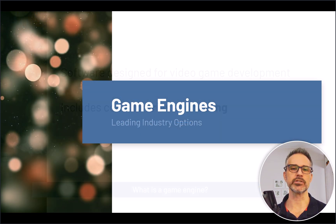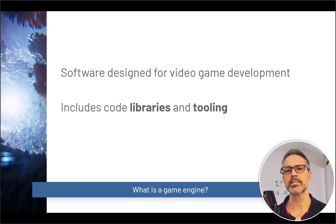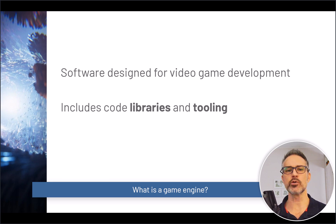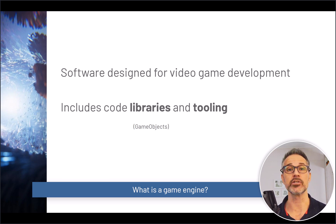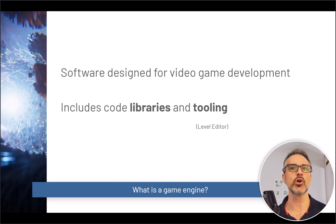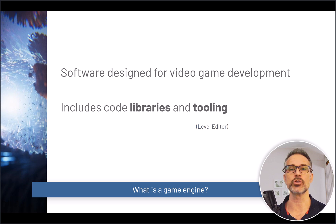So let's talk about game engines. Game engines are software designed specifically for video game development. This usually includes two major parts: code libraries and tooling. With Unity as an example, code libraries would include concepts and code related to things like game objects, very central to every day of scripting inside a Unity game. Tools and editors are also included — things like a level editor, a scene graph, ways to organize things in your 2D or 3D world. That's all part of the tooling side.